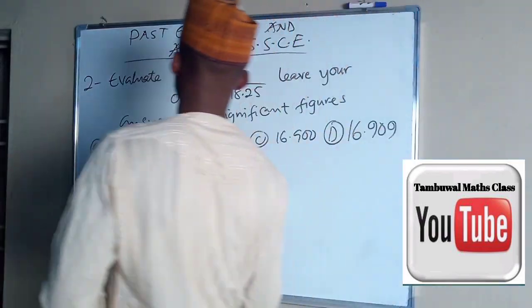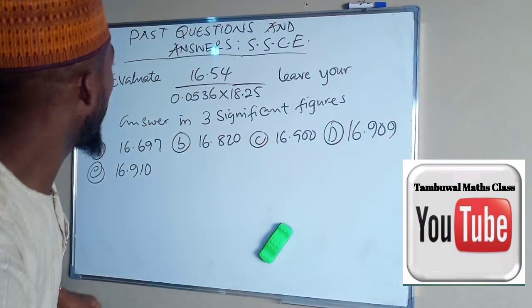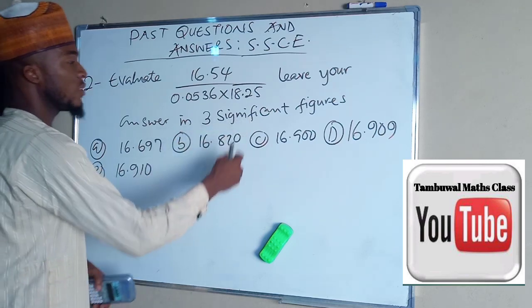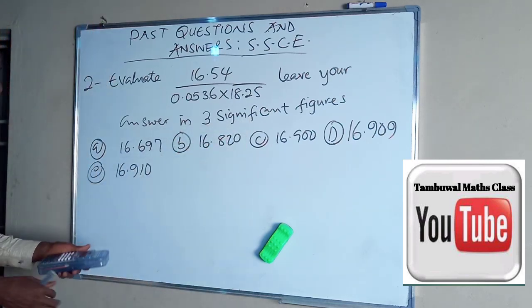And this is the second question. We are asked to evaluate 16.56 divided by 0.0536 times 18.2. In this case, you just need your calculator to simplify this. And we are asked to leave the answer in 3 significant figures and these are the options given to us.